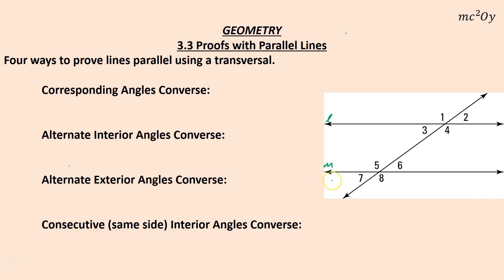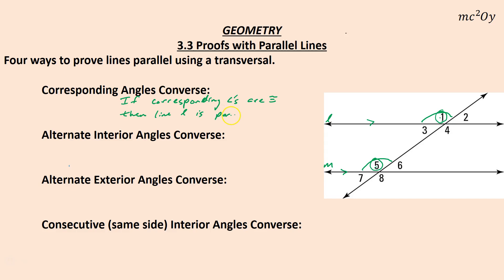We can prove that line L is parallel to line M by the corresponding angles converse — saying if you have corresponding angles, for instance angles 1 and 5, that are congruent, then you have parallel lines. So if corresponding angles are congruent, then line L is parallel to line M.